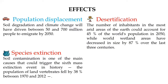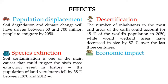Regarding desertification, the number of inhabitants in the most arid areas of the earth would account for 45 percent of the world's population by 2050, while world wetland areas have decreased by 87 percent over the last three centuries. Many people are forced to live in areas with large amounts of waste and poor habitats, which is unhealthy and unacceptable.